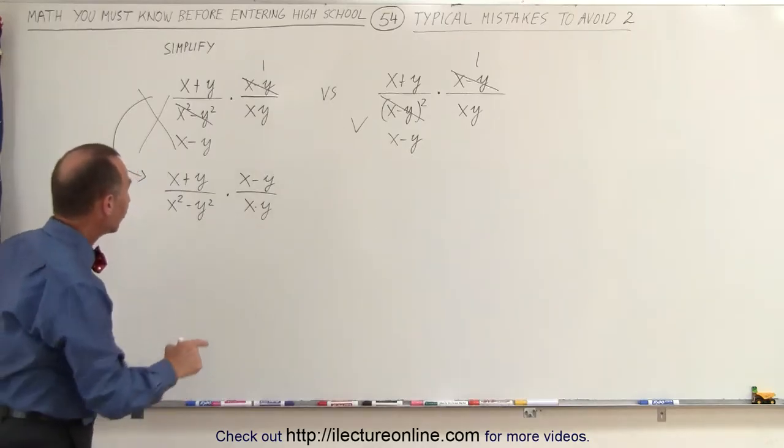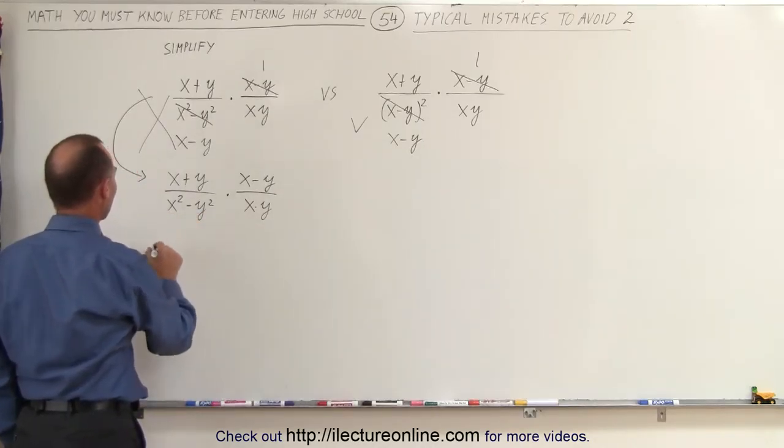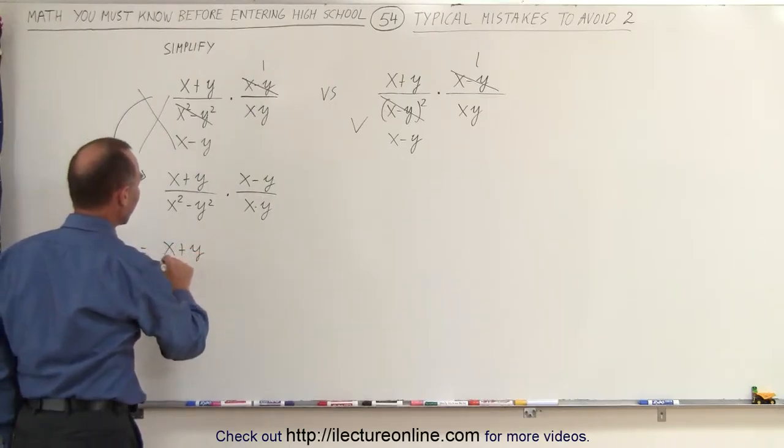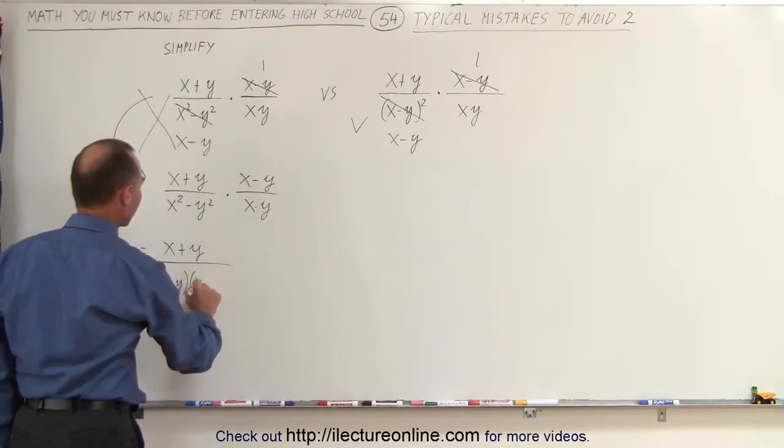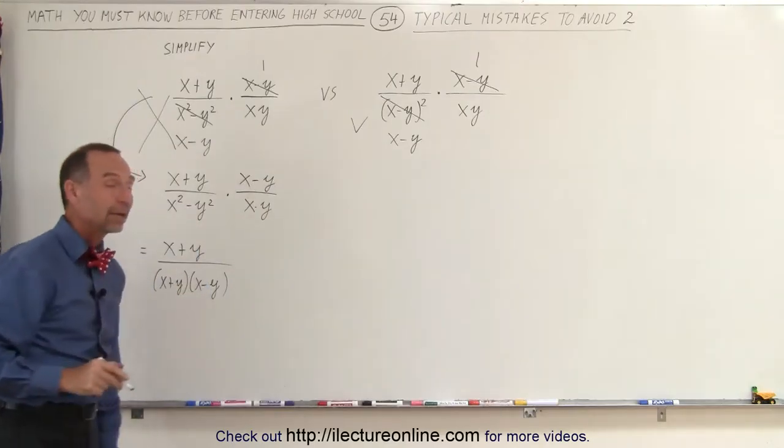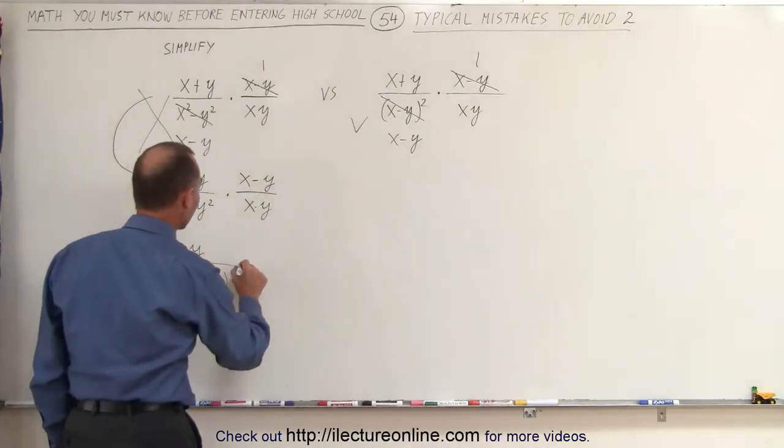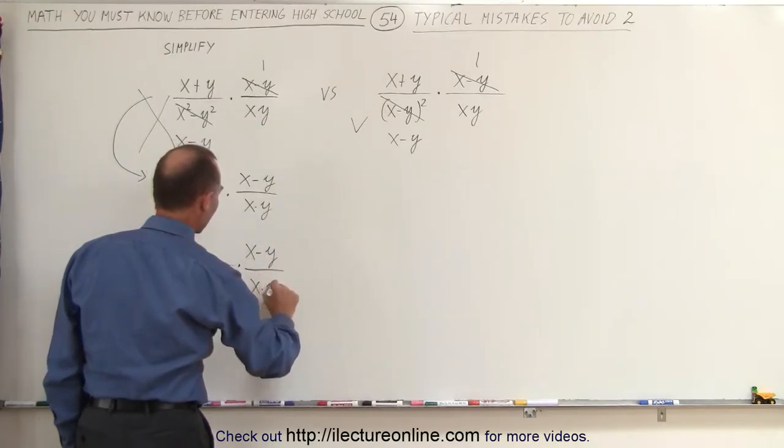What we can do instead is we can factor this, because this is the difference of squares. And so this can be written as x plus y divided by x plus y times x minus y. If we multiply these two together, we end up with this denominator again. And then we multiply this times x minus y and x times y.